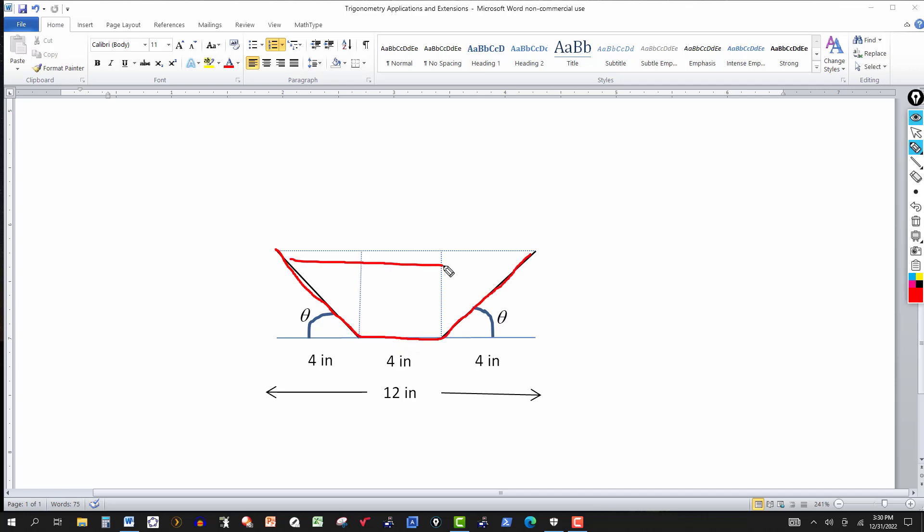So this is the area that you want to maximize. This opening right here. Again, this is the front end here, and this side is measured 4 inches on each side, and then you bend this up to form the gutter.